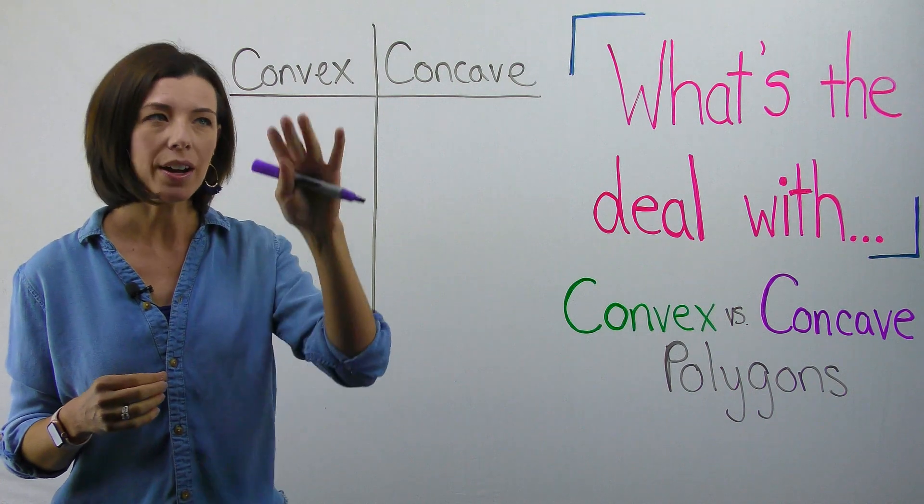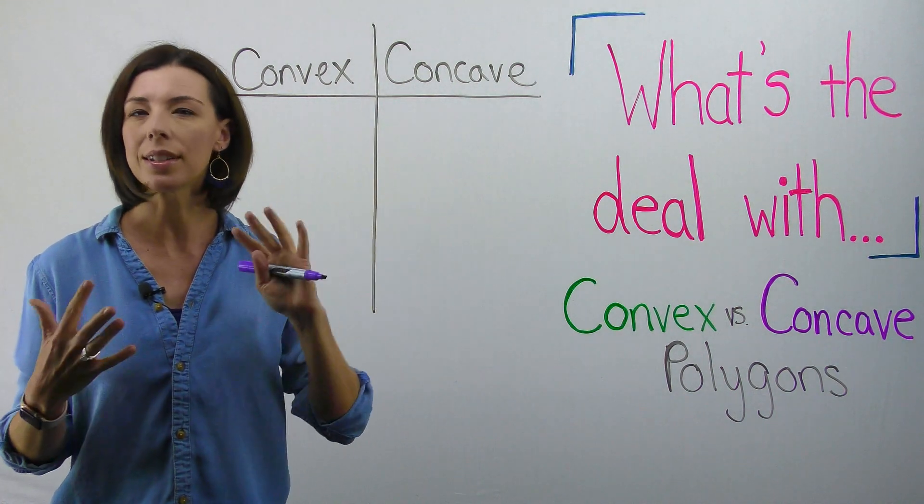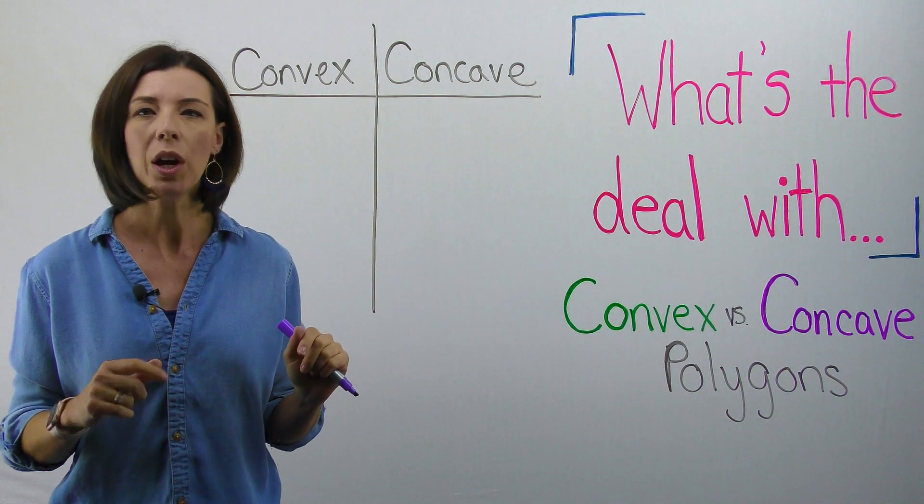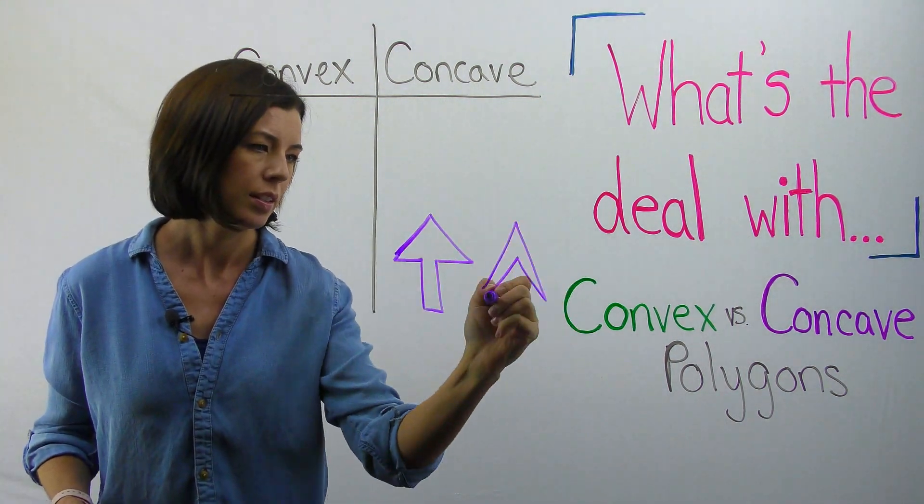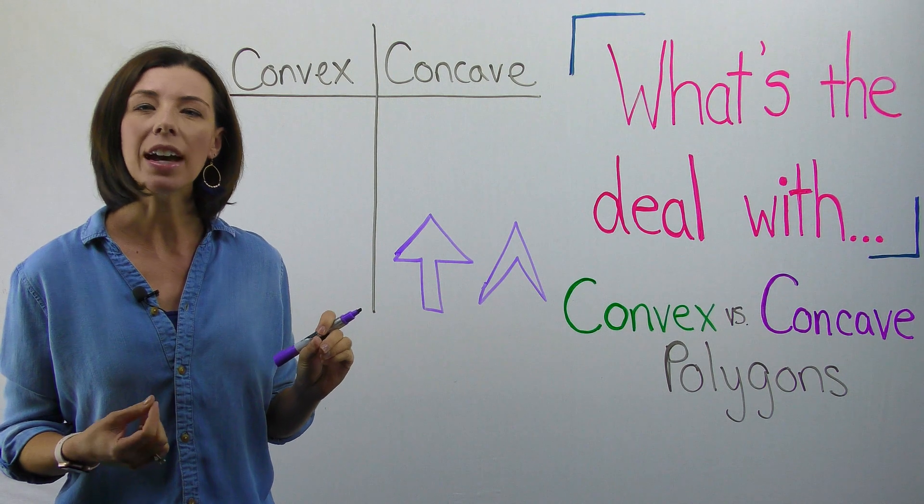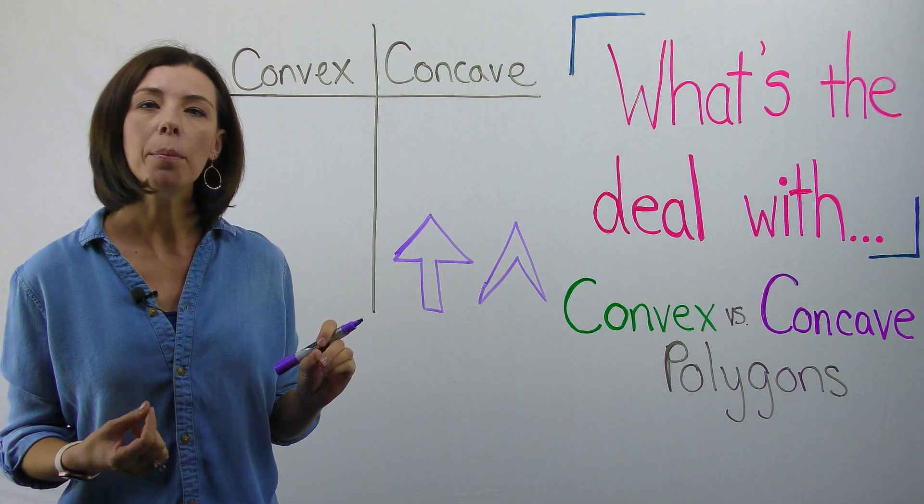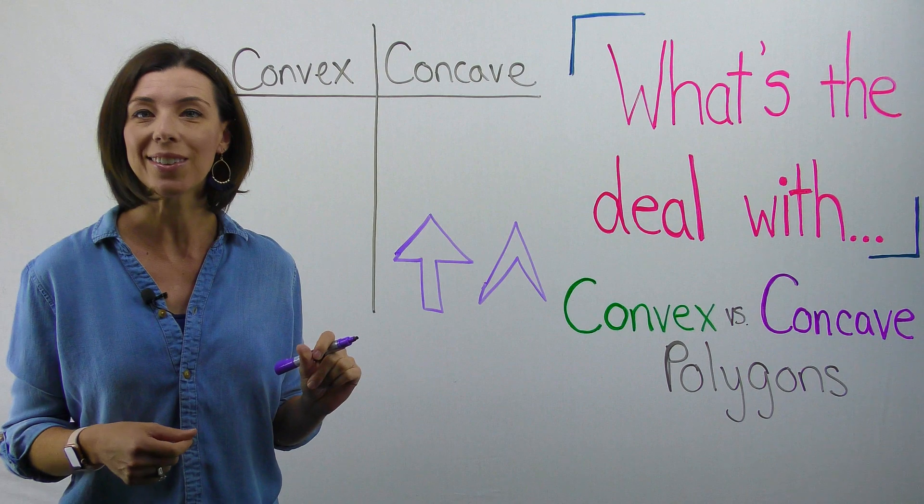So to recap, let's compare convex versus concave polygons and see if we can come up with a definition. So again, concave polygons look like this. They are polygons that have at least one angle that is more than 180 degrees or a reflex angle.